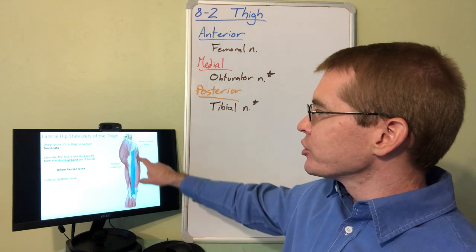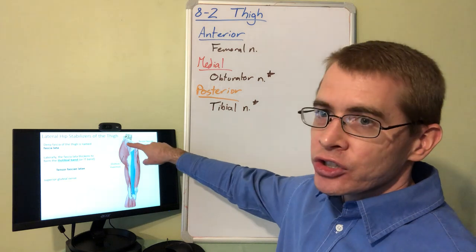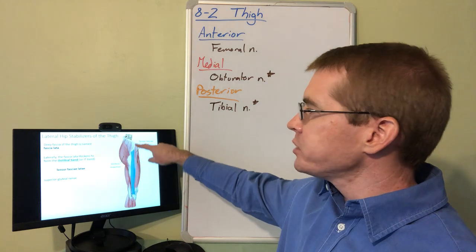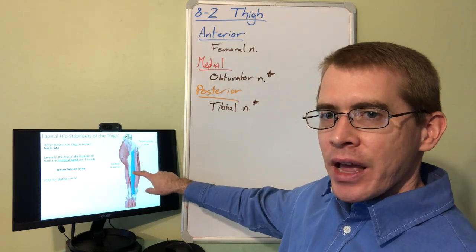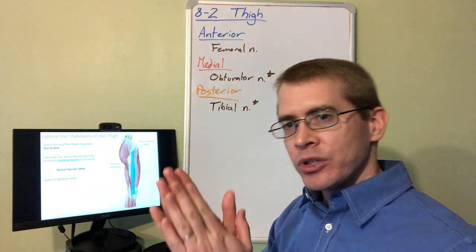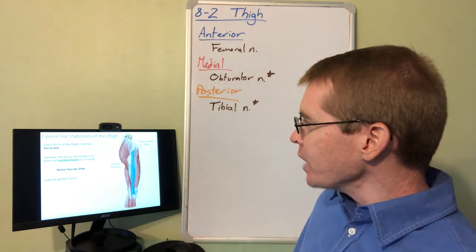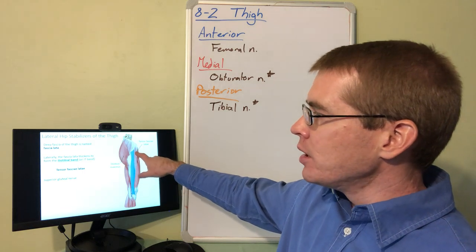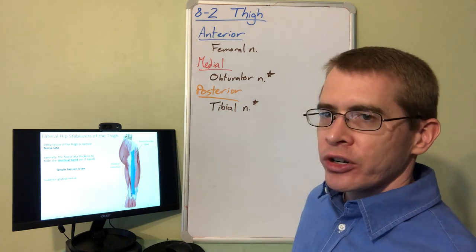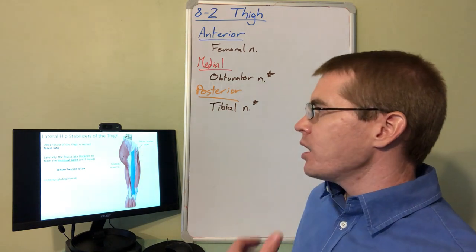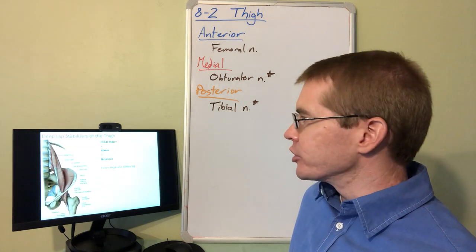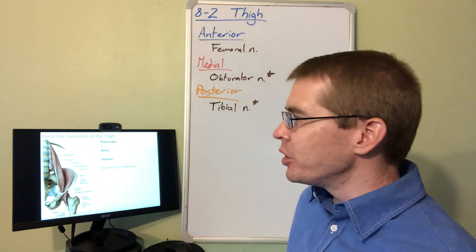The tensor fascia lata, which is musculature embedded within the fascia lata, will tense that IT band and keep the thigh upright and vertical to keep us from toppling over. That tensor fascia lata muscle, along with the gluteal muscles, is innervated by superior gluteal nerve. We'll talk about the gluteal region more in a different lecture.